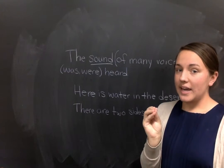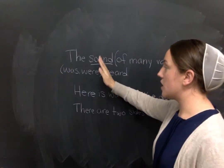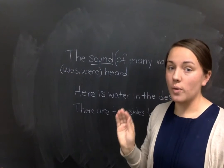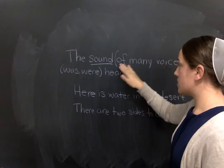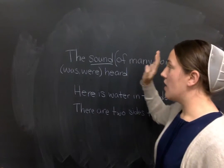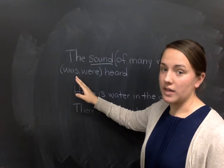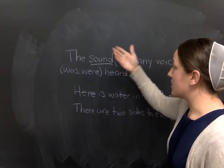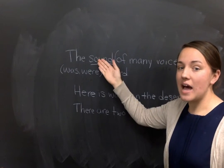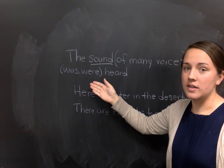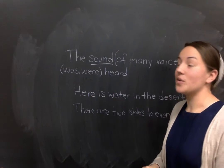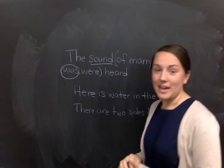Okay. So, what I want you to get here is the subject and verb must always agree. Even if there's a prepositional phrase here, the subject and verb is what needs to agree. So, sound was or sound were. Sound was.